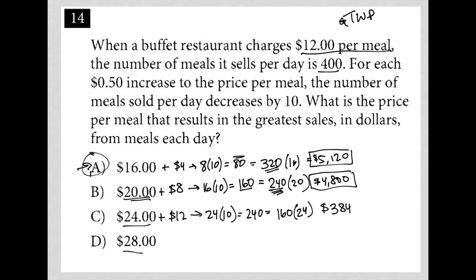So as expected, as I raise the price of the meal, I'm getting more per meal, but I'm getting less overall because fewer people are buying those meals. So the price per meal that results in the greatest sales in dollars for meals each day is choice A, the $16.